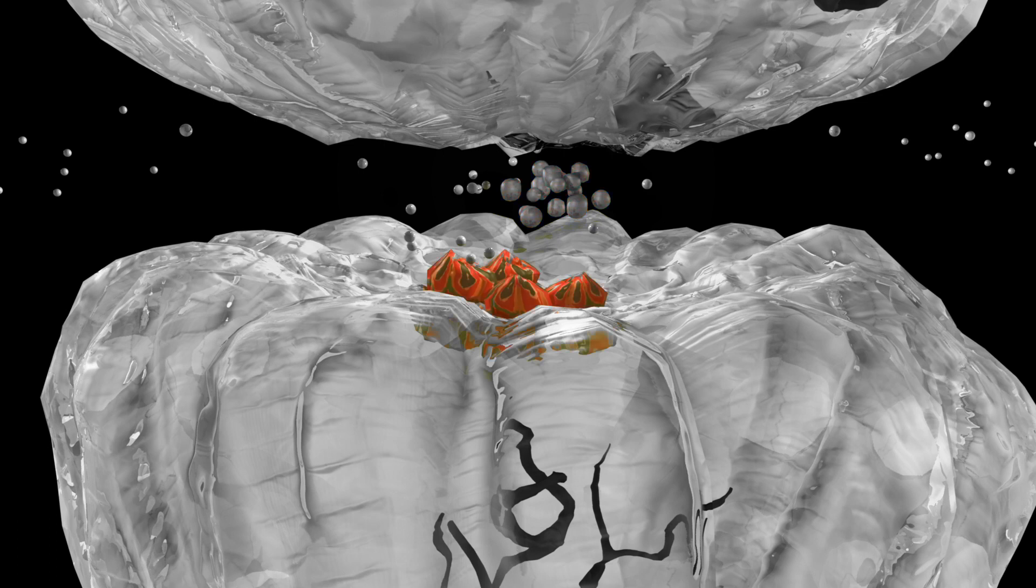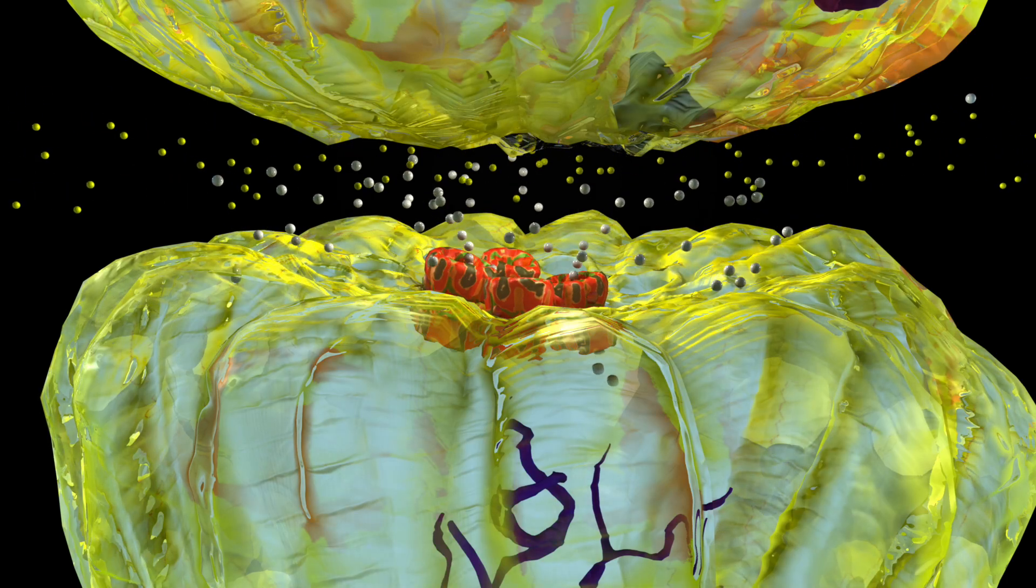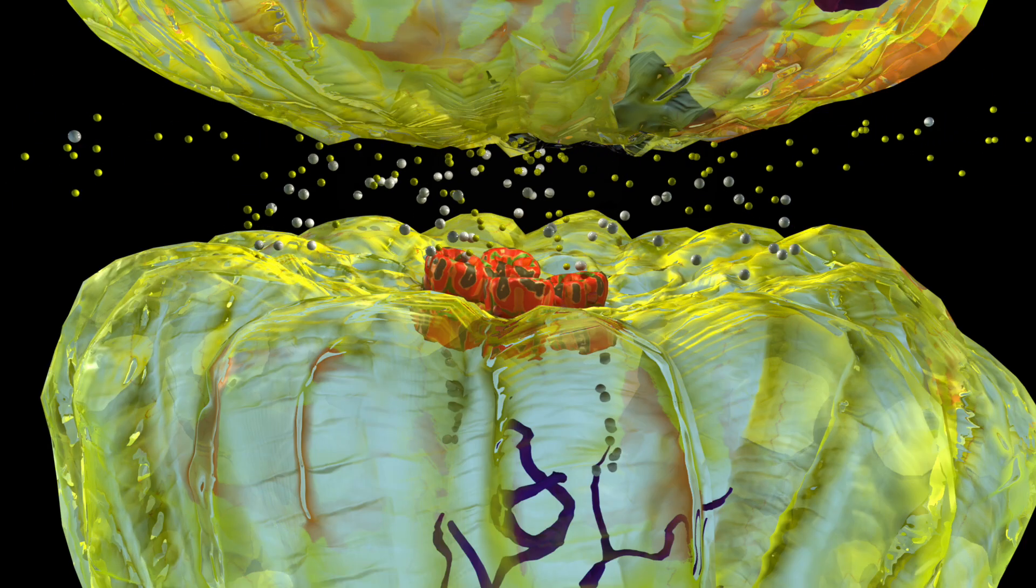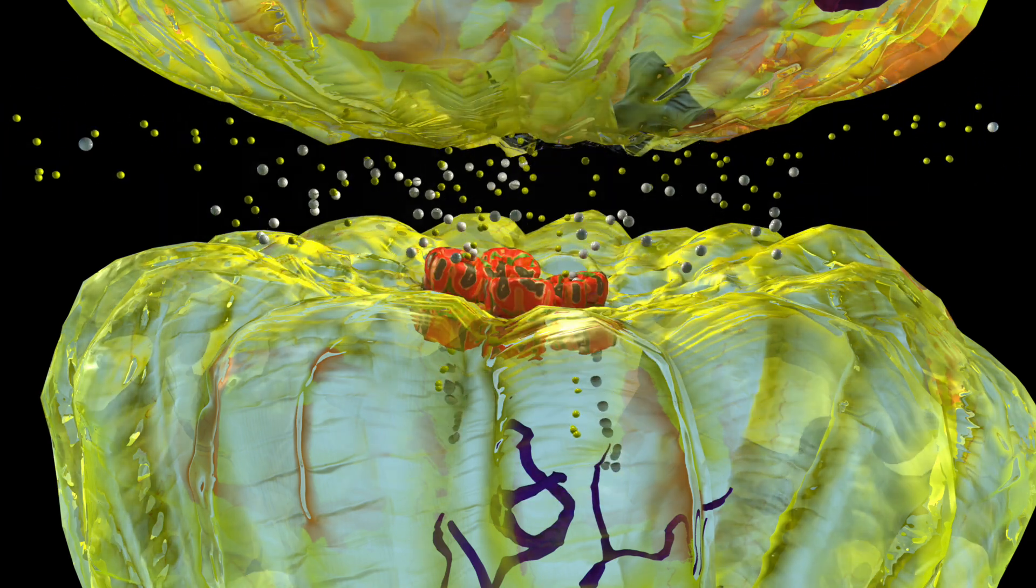This is the NMDA receptor. When glutamate binds, it opens the receptor and allows calcium and sodium to enter. This is calcium. This is sodium. The positive charge of these ions allows the electrical signal to continue to the next nerve.